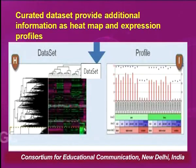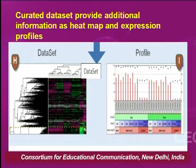These three record types - GPL, GSM, and GSE - are present in the uncurated data submitted by the original submitter. NCBI curates this data, and in the curated data we get additional information: we get a heat map as a data set and we also get the expression profile. We will look at these in a little more detail in the next few slides.